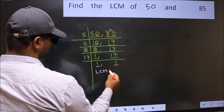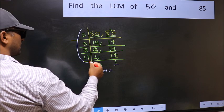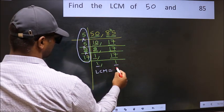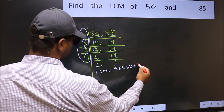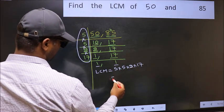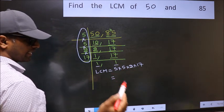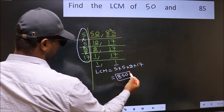So our LCM is the product of these numbers. That is 5 into 5 into 5 into 2 into 17. When we multiply these numbers, we get 850 is our LCM.